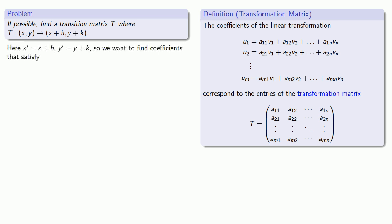So here, our new value of x, x prime, is equal to x plus h, and y prime is equal to y plus k. So we want to find coefficients that satisfy the formula x plus h is something times x plus something times y, and y plus k is something times x plus something times y.